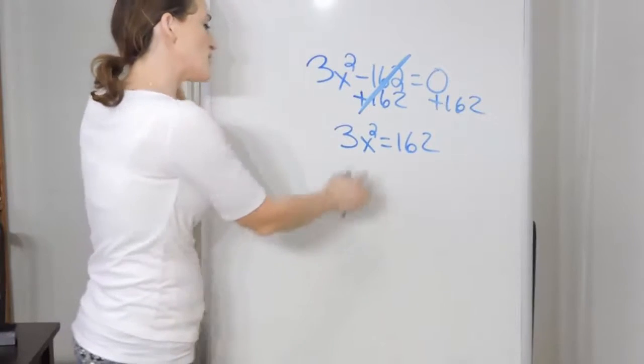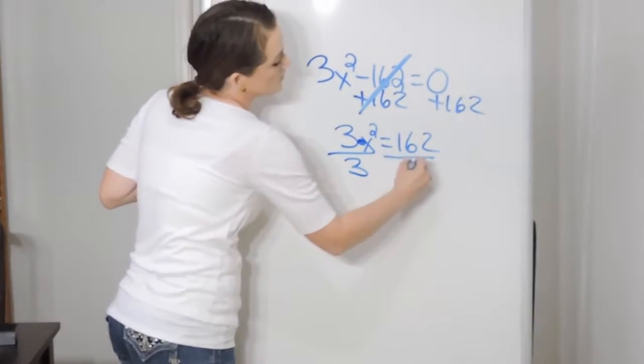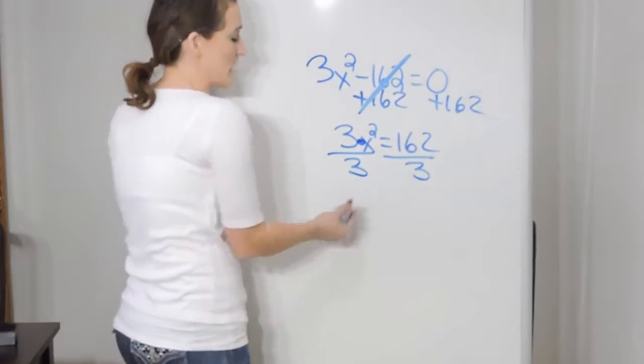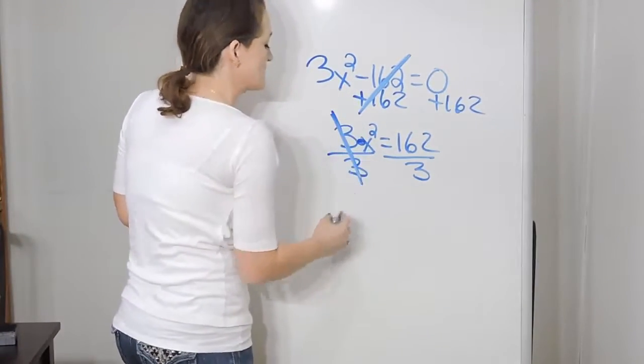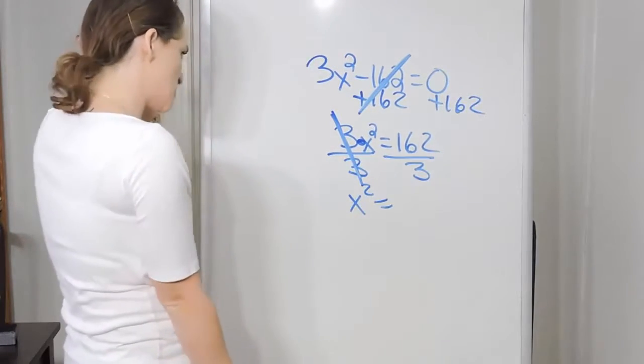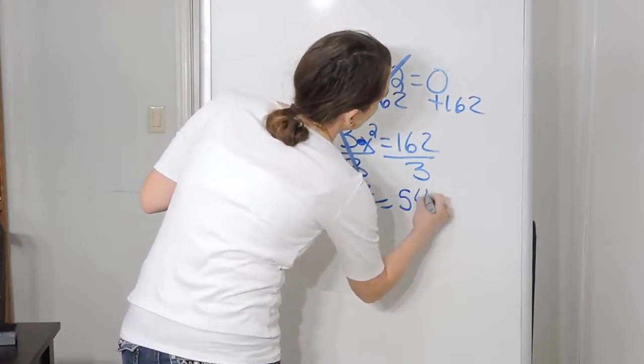Then what I'm going to do, so this is 3 times x², so the opposite of multiplication is division. I'm going to divide both sides by 3. The 3 will cancel on the left-hand side, leaving me with x² is equal to, let's see, 162 divided by 3 is 54.